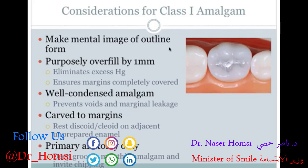Some more considerations for class 1 amalgam: make a mental image of the outline form you prepared so you know what the final filling should look like and where the original edges were. Purposely overfill by about a millimeter or more — this eliminates excess mercury and ensures margins are completely covered. The last thing you want is to find a big gap between tooth and amalgam after it sets, which can be difficult to fix without redoing part of it.